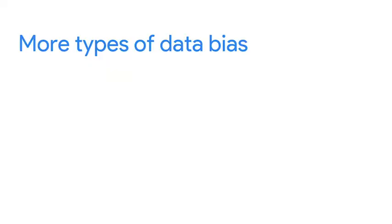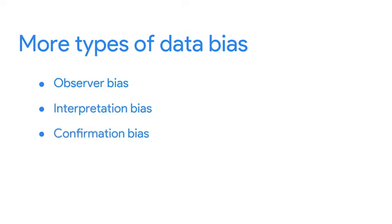In this video, we'll explore three more types of data bias — observer bias, interpretation bias, and confirmation bias — and we'll learn how to avoid them.